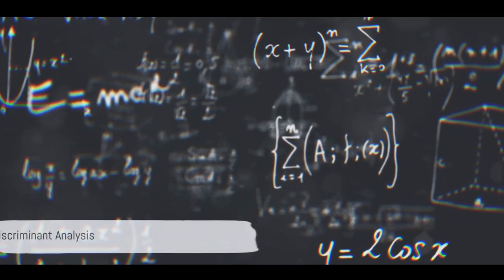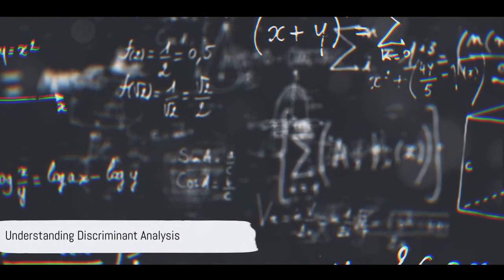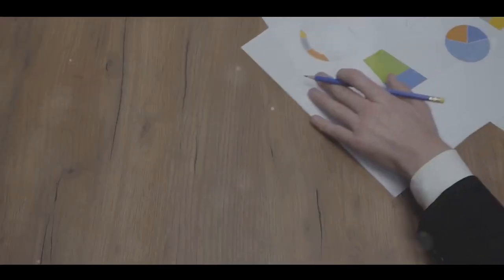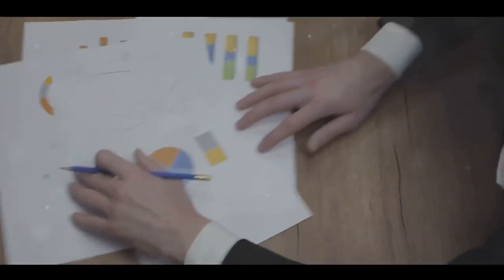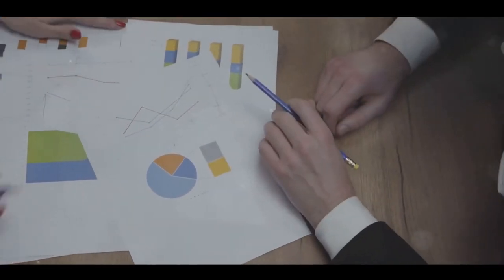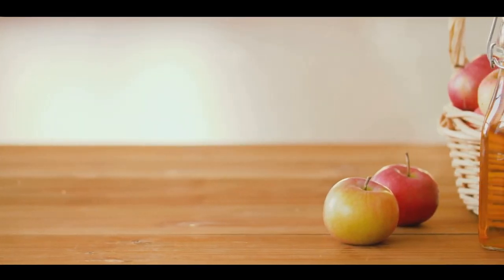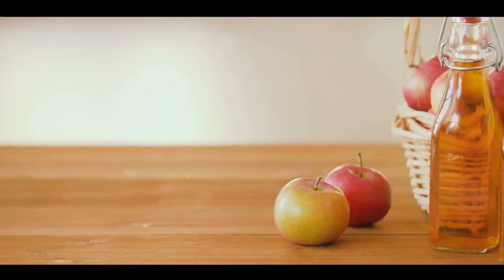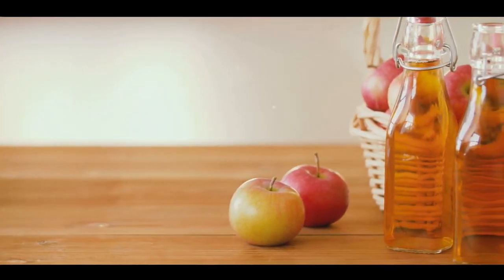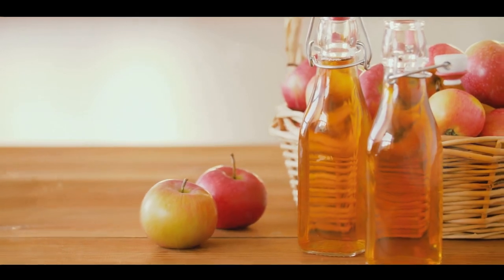Step one to understanding QDA is grasping the concept of discriminant analysis. This method is used to distinguish or discriminate between different categories. It's like having a magic wand that tells you which fruit is an apple and which one is an orange.